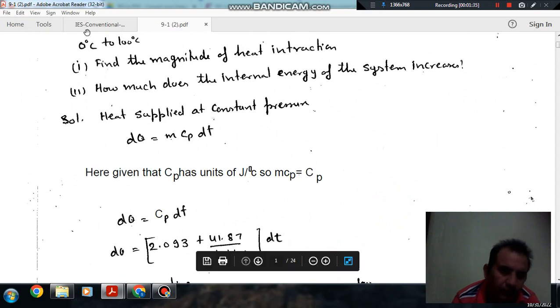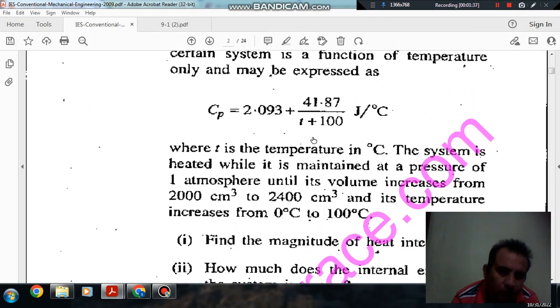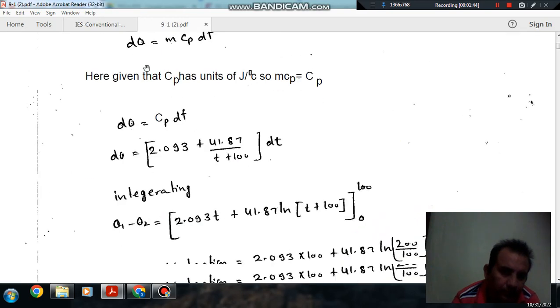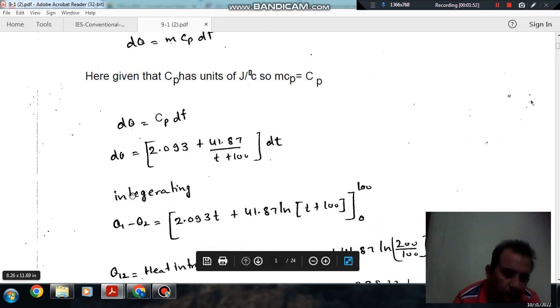So we can write in this case m Cp as capital Cp. The value of Cp is given as 2.093 plus 41.87 divided by T plus 100. Integrating from 0 to 100, we get Q equals 2.093 T plus 41.87 ln(T plus 100) evaluated from 0 to 100.